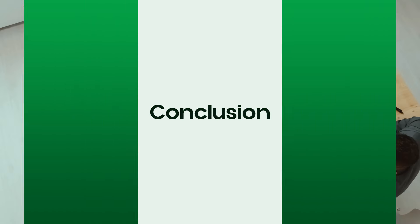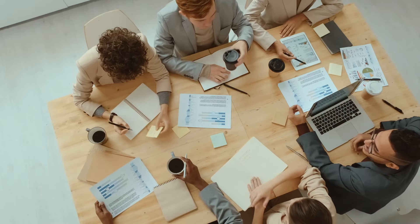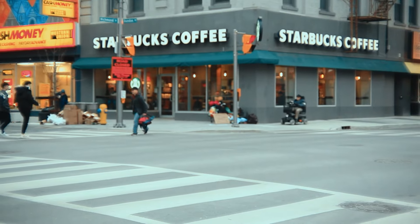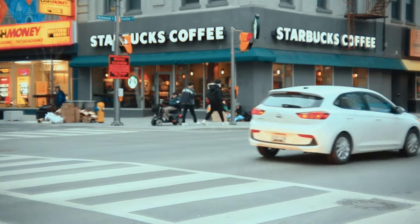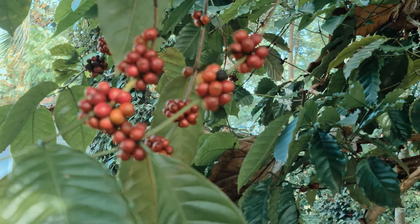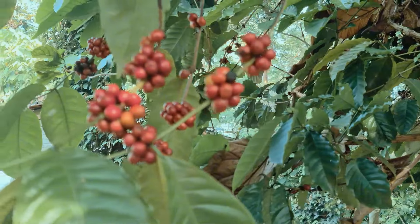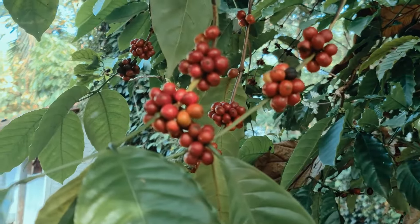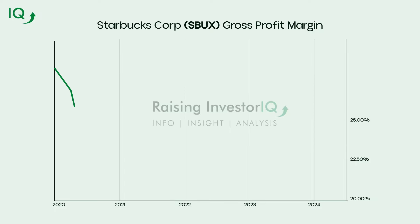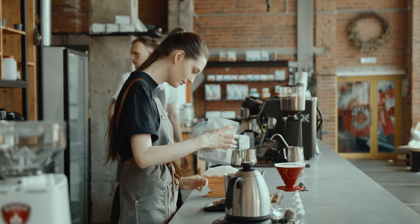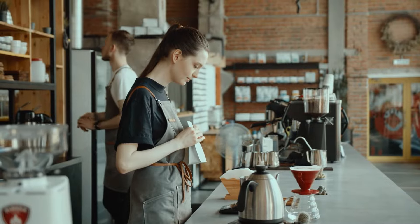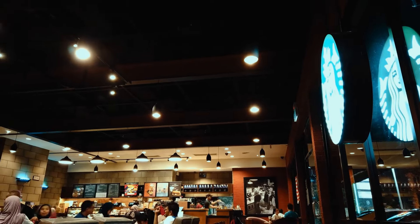Let's bring everything to life with a real-world case study. Starbucks is a global coffee powerhouse that has maintained strong gross margins for years — how does it do this, especially in an industry where coffee beans, a significant cost, can fluctuate wildly in price? One of Starbucks's secrets is its ability to maintain high margins by offering premium products at premium prices, positioning itself as a high-end brand.